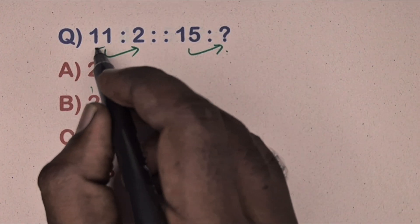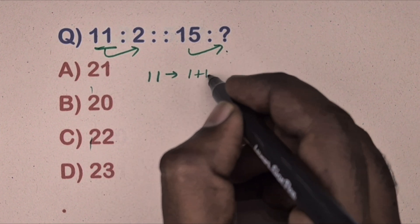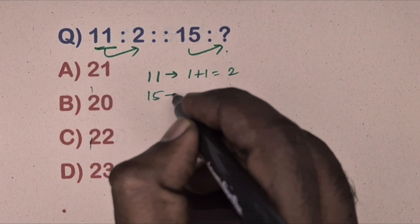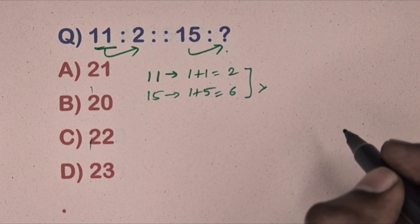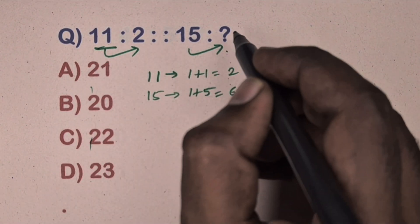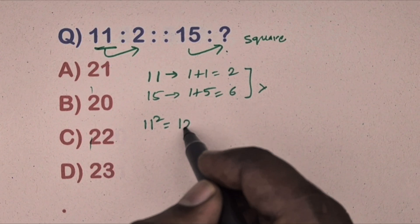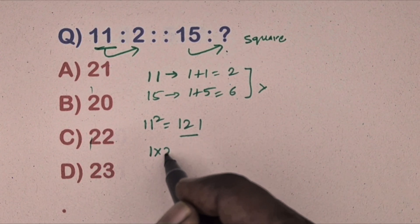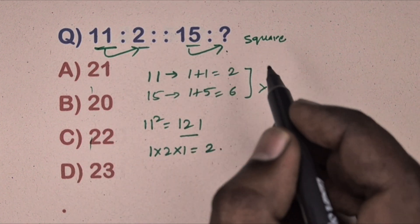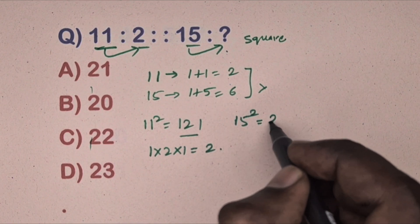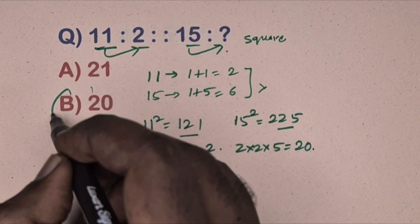Next question: eleven is related to something, fifteen is related to which number. Trying addition of digits: eleven gives two, fifteen gives six — but six is not present in the options, so this is the wrong method. Correct method — this is square and digit-multiplication relation. Take eleven, eleven squared equals 121, multiply the digits: one times two times one equals two. Same way, take fifteen, fifteen squared equals 225, multiply the digits to get 20. Option B is the correct answer.